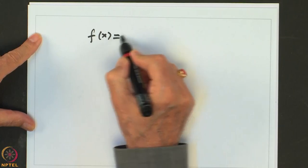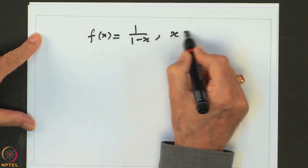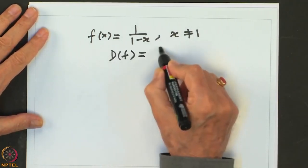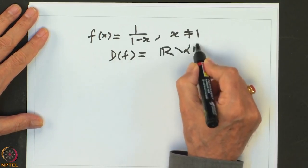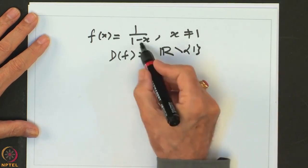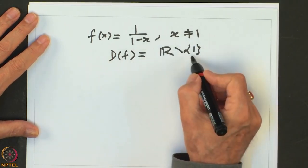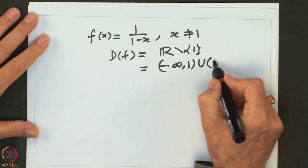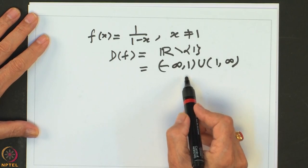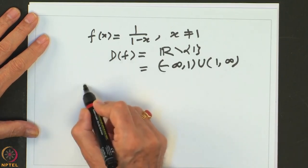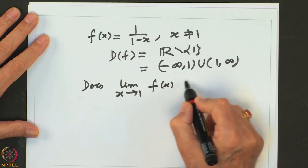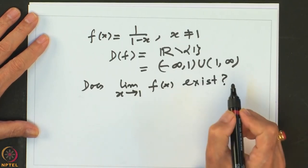The previous example we looked at was F(x) equal to 1 over 1 minus x, x not equal to 1. The domain of the function is the whole real line minus the point 1, which is the same as minus infinity to 1, union 1 to infinity. We want to know: does the limit as x goes to 1 of F(x) exist?